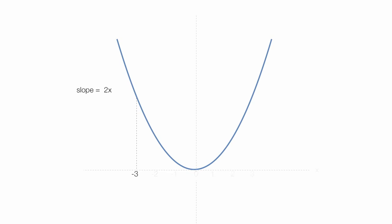So the slope of the tangent line is equal to 2 times that negative 3, which is equal to negative 6. So the slope is negative 6.